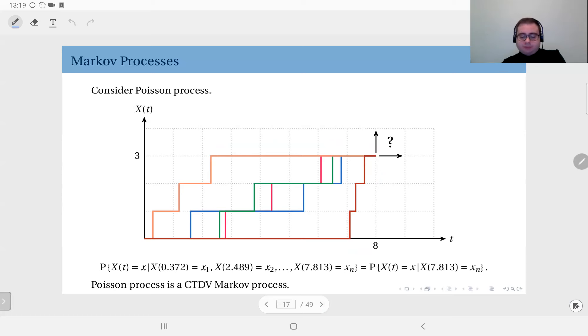So we can express this as, for instance you observe this process at 0.372, 2.489, etc. at a bunch of time instances. Let's say your latest observation is at 7.813. Based on this information you would like to write the probability that at time t, where of course your t is greater than your latest observation 7.813, given all these observations, is equal to the probability that X(t) will be equal to x after this point given only your latest observation. That is sufficient to characterize this process.